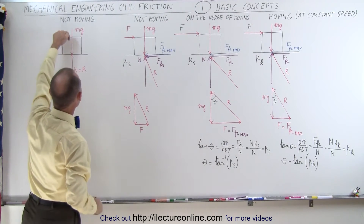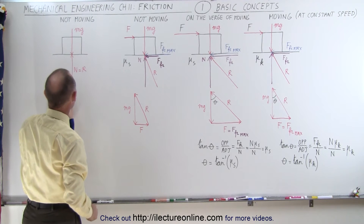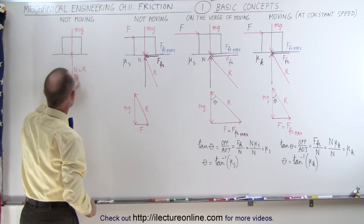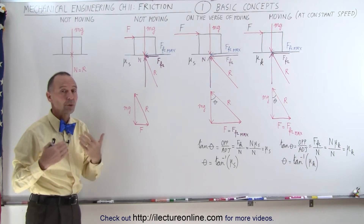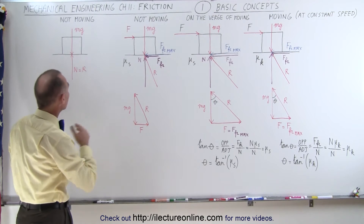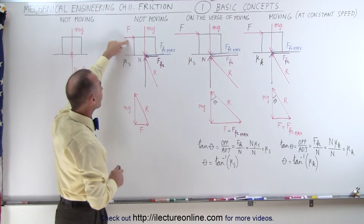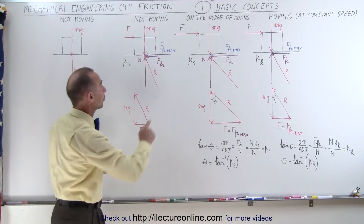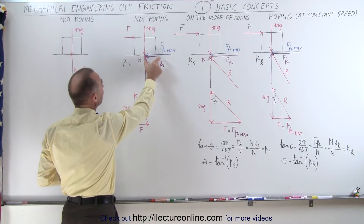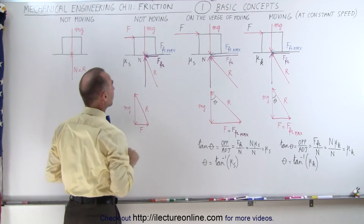Notice that here we have the weight of the object due to gravity pushing down on the surface, the surface pushing back, so the normal force of the surface pushing back equals the reaction force. If there's a horizontal force smaller than the maximum friction force between the two surfaces, it will be counterbalanced by the friction force pushing back on the other side, and therefore the block is not moving.